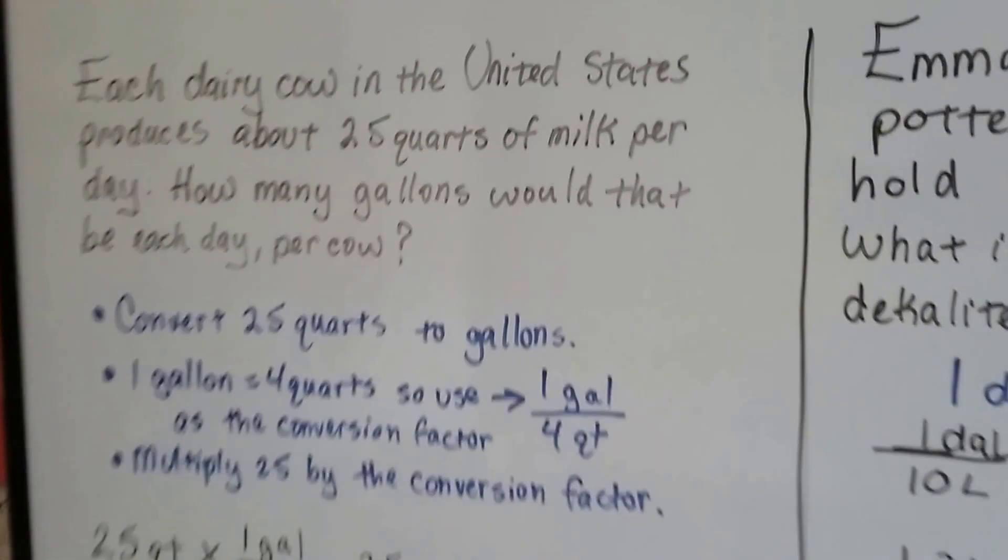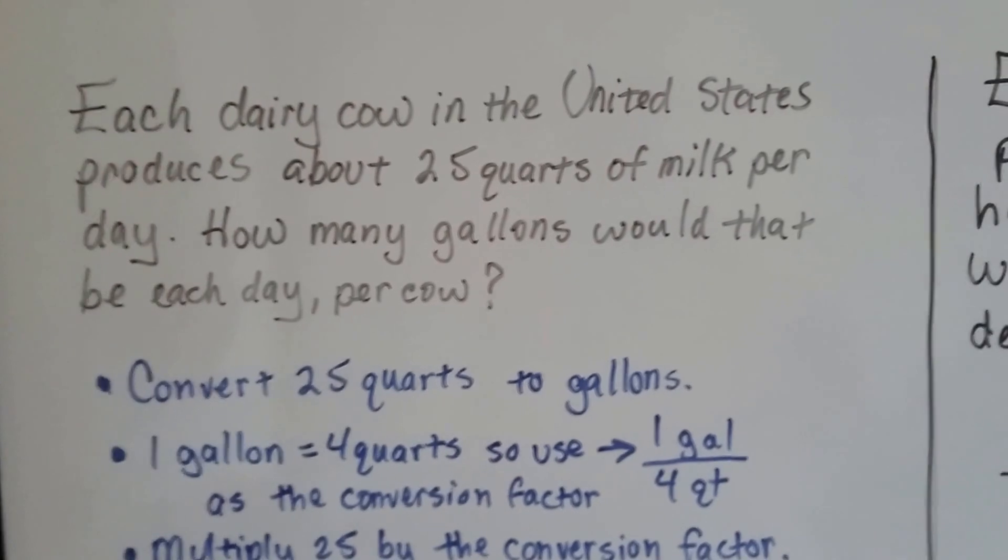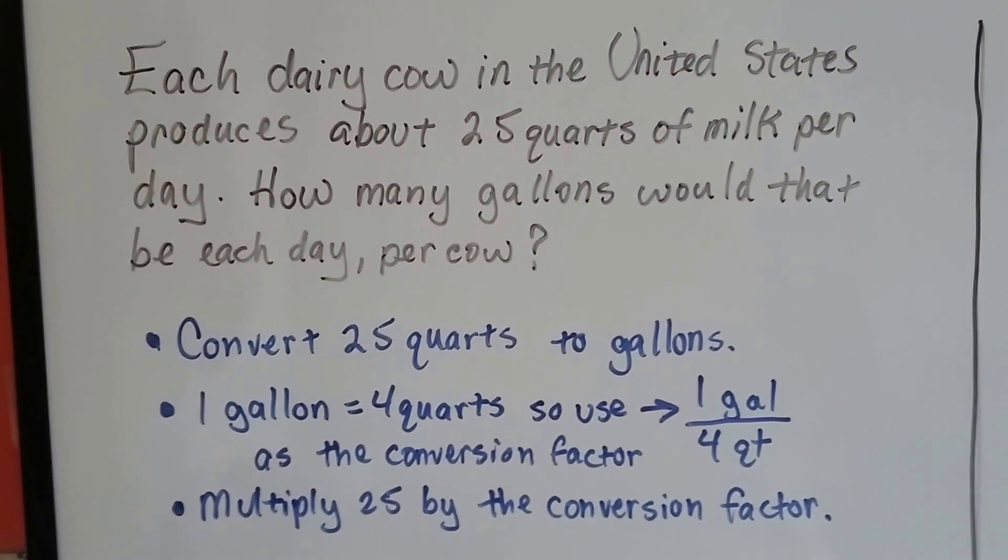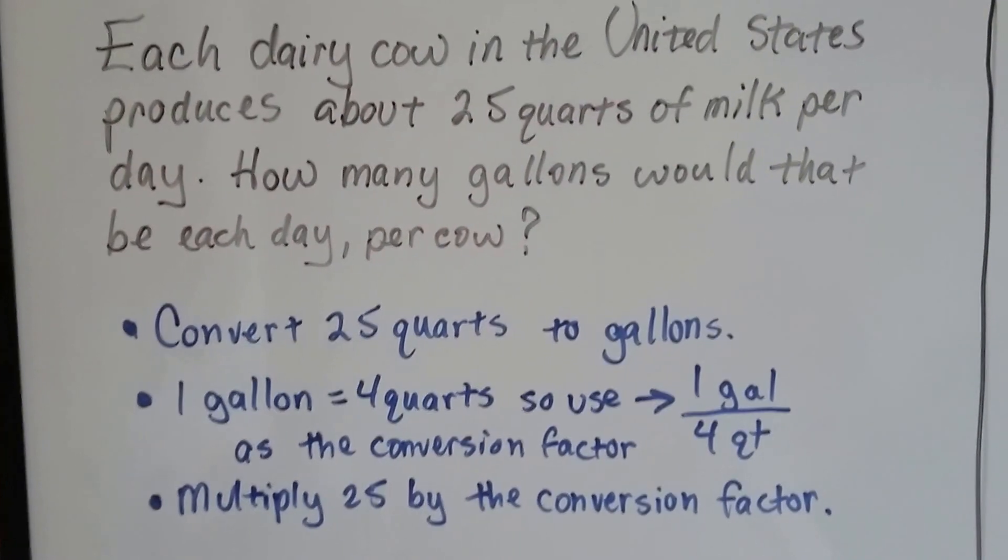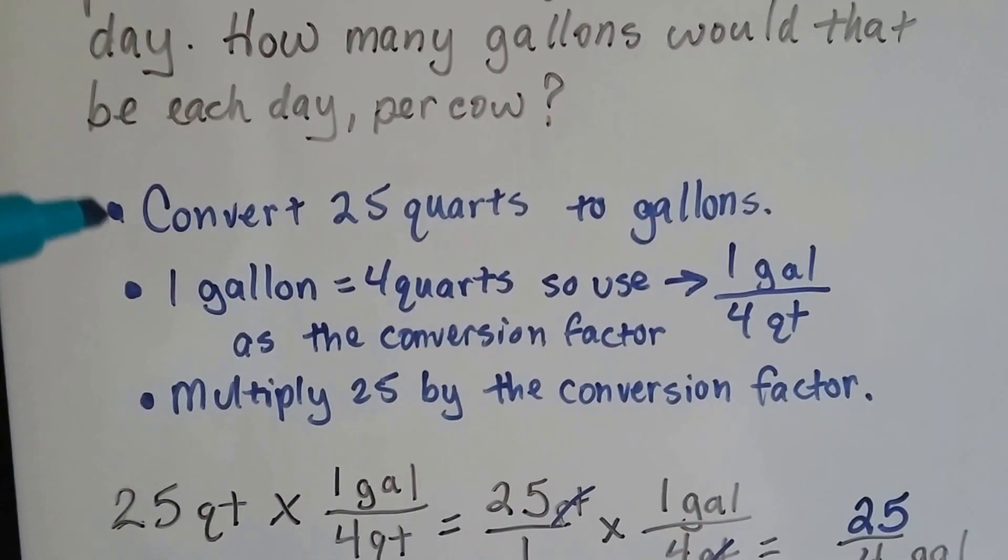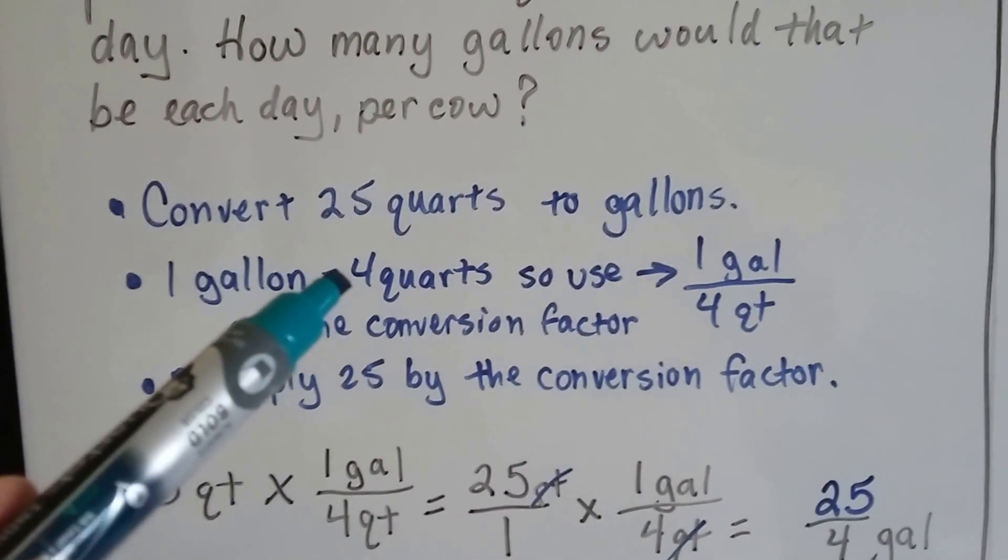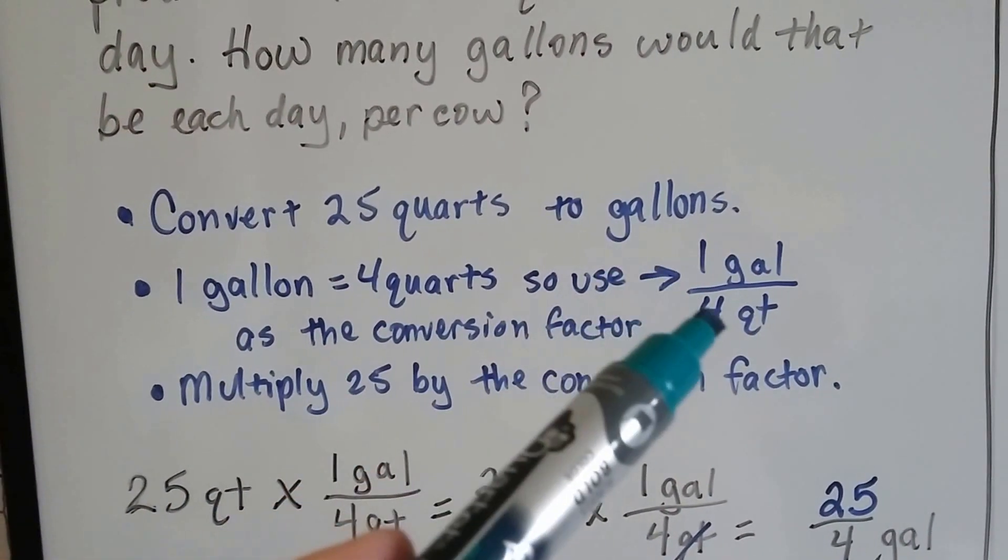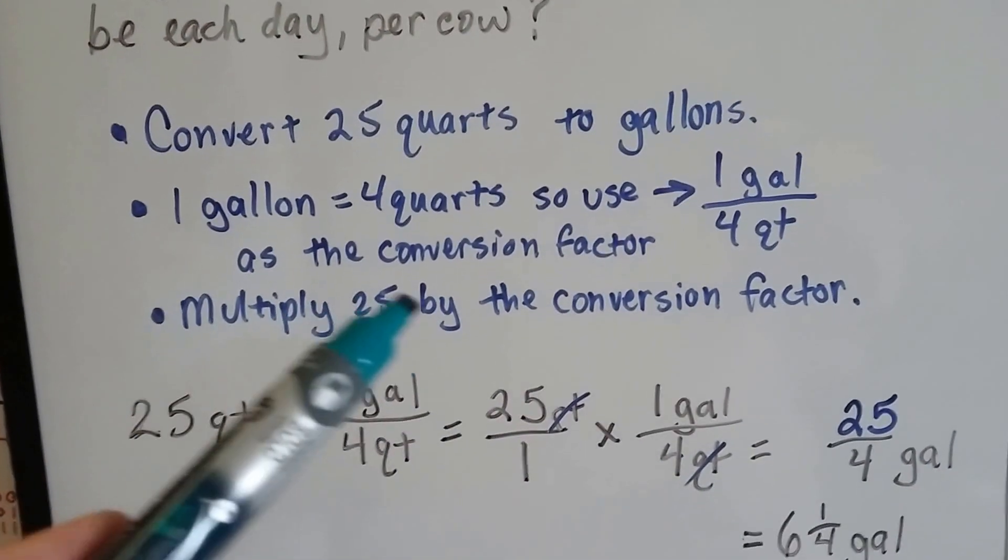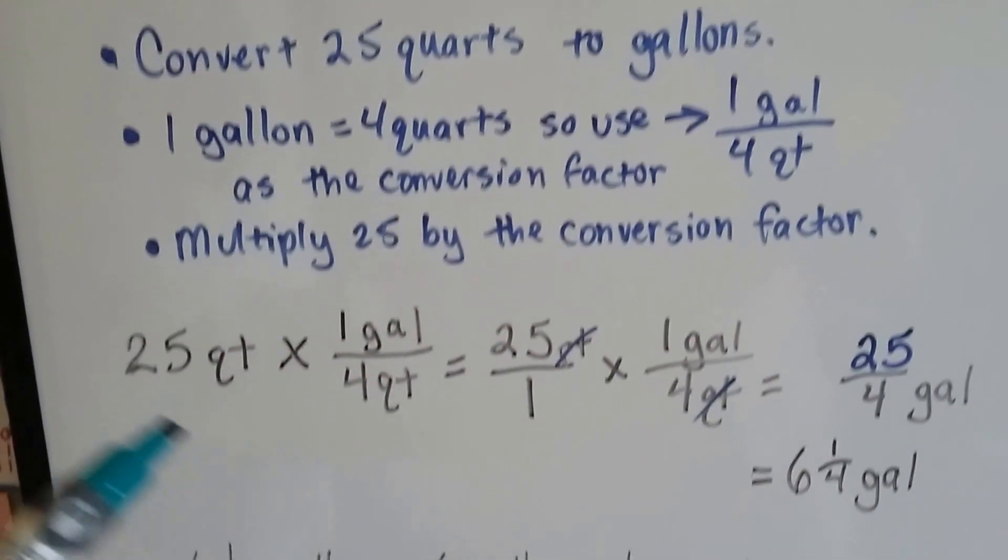Each day, a dairy cow in the U.S. produces about 25 quarts of milk. So how many gallons would that be each day per cow? 25 quarts. We're going to convert 25 quarts to gallons. 1 gallon is 4 quarts, so we're going to use 1 gallon over 4 quarts as the conversion factor. We're going to multiply 25 by this conversion factor and get our answer.